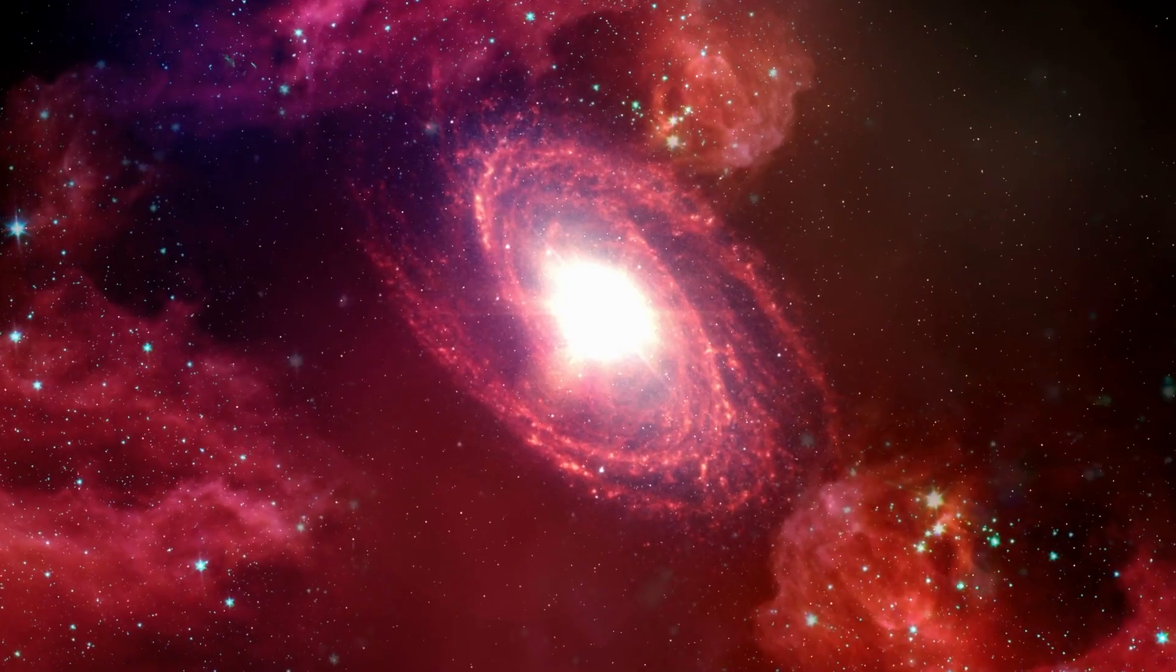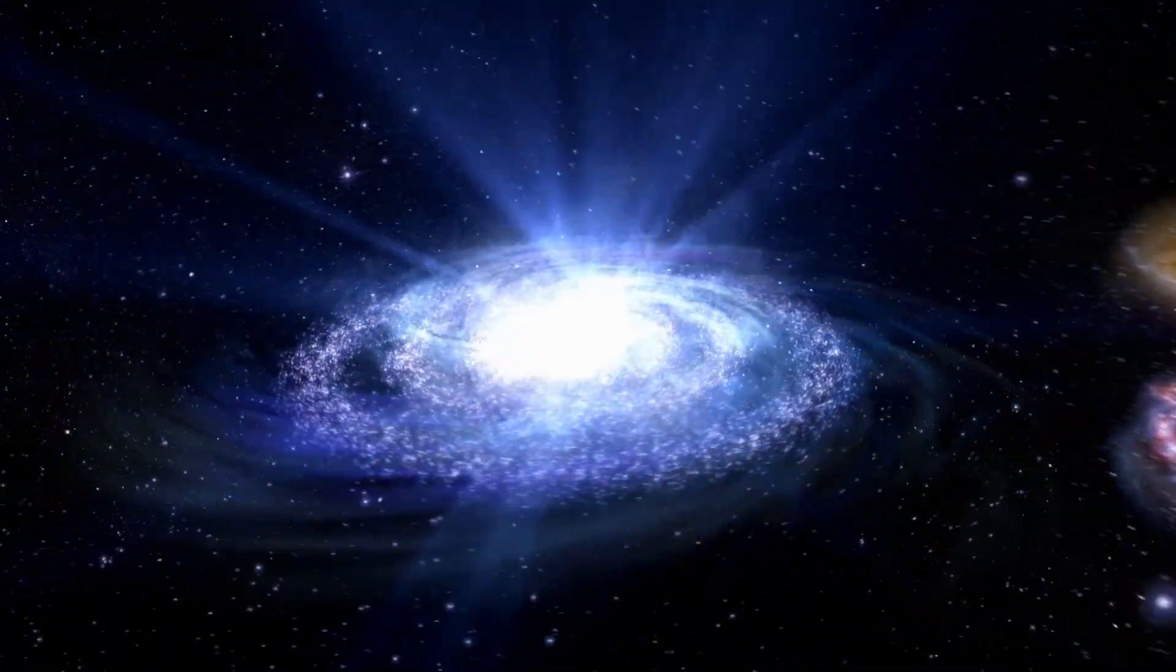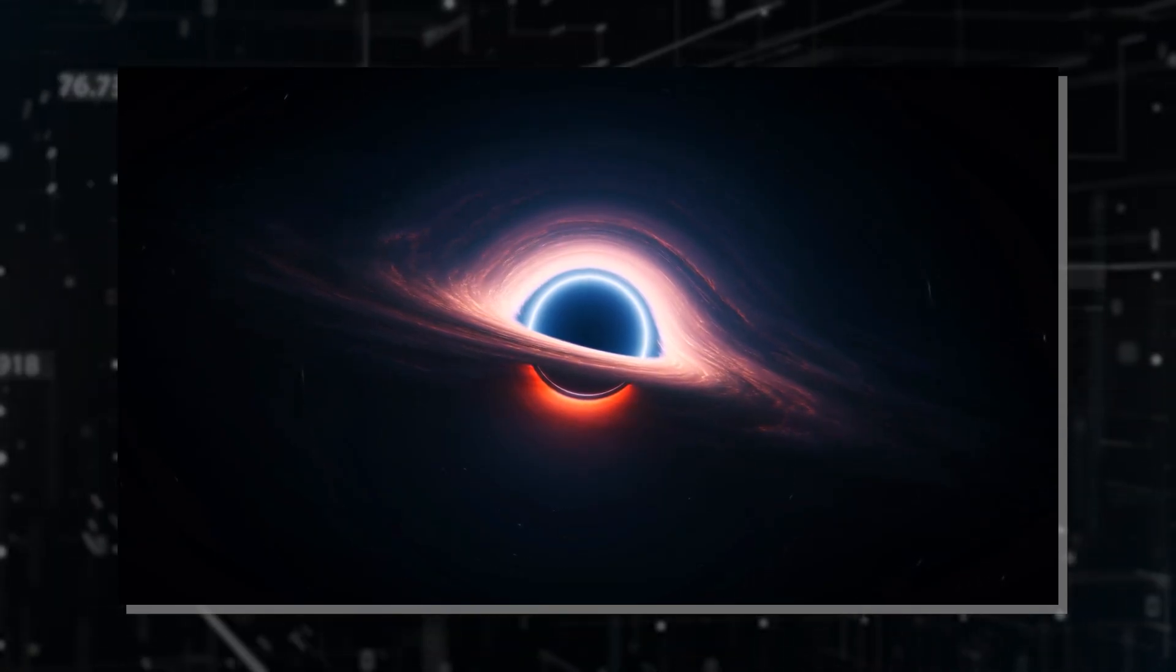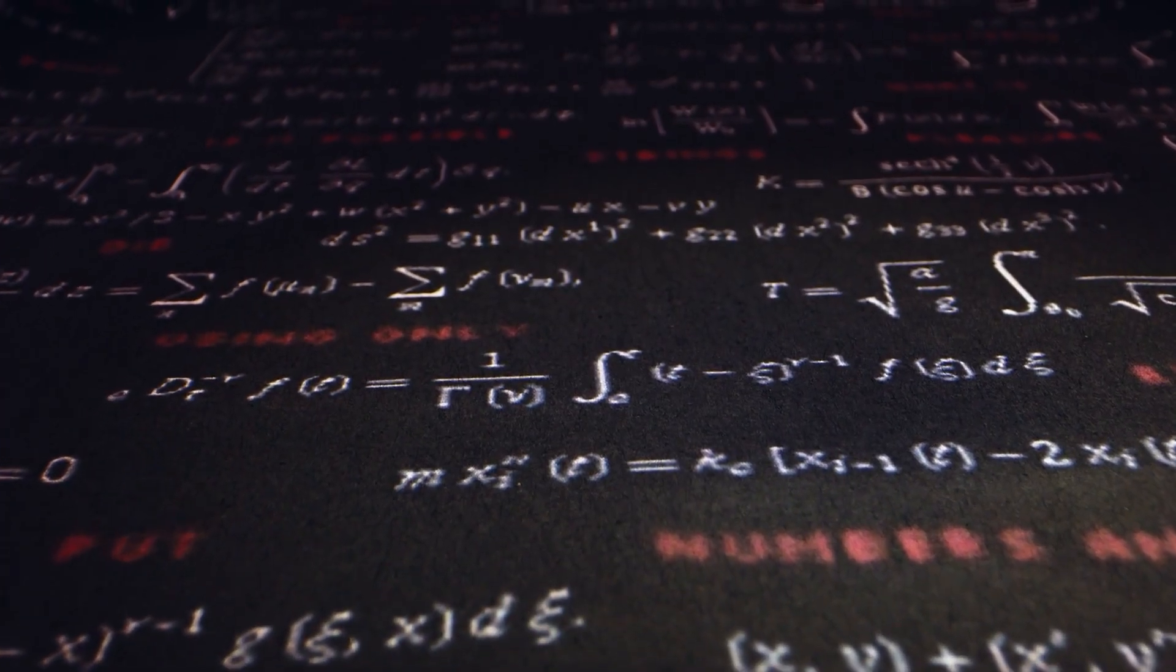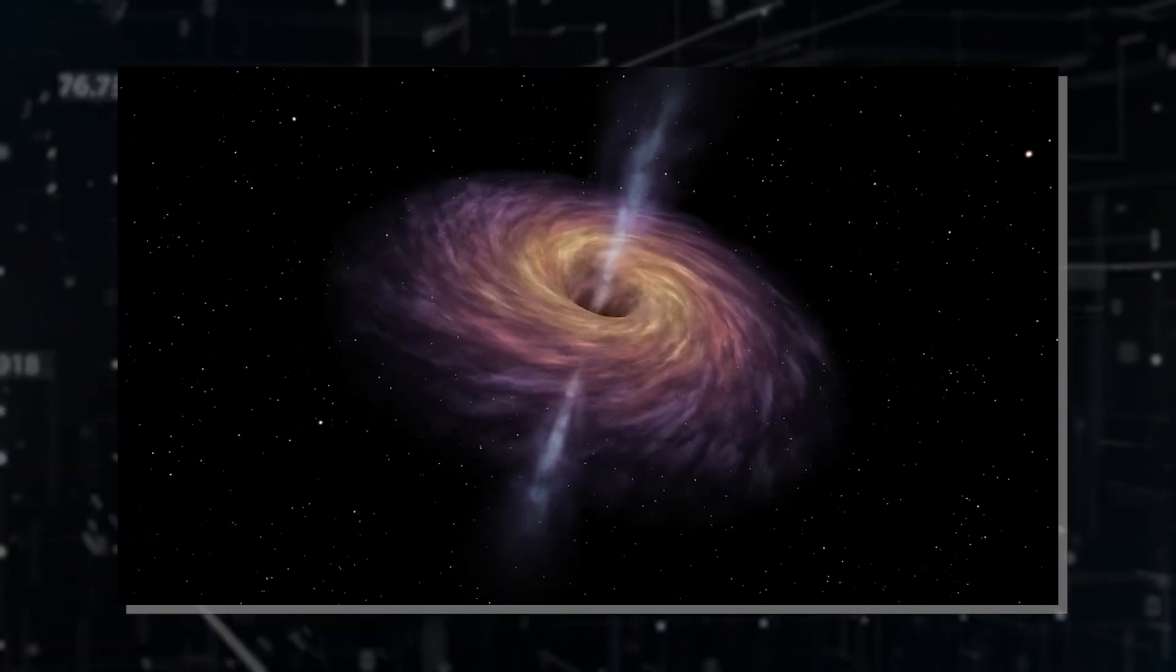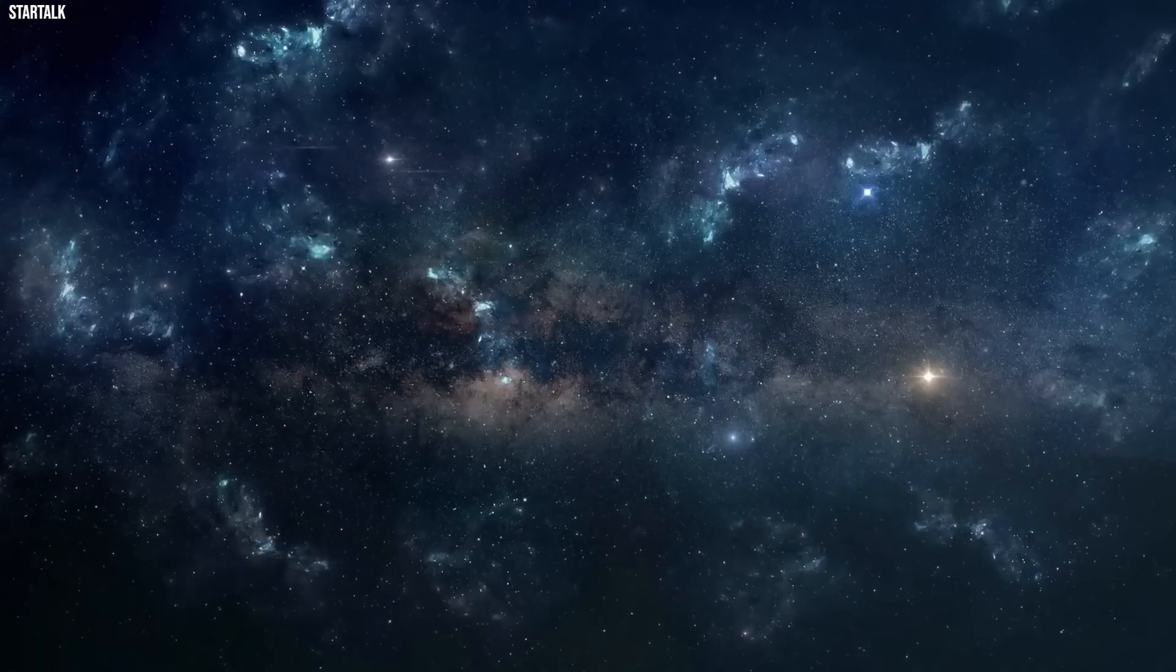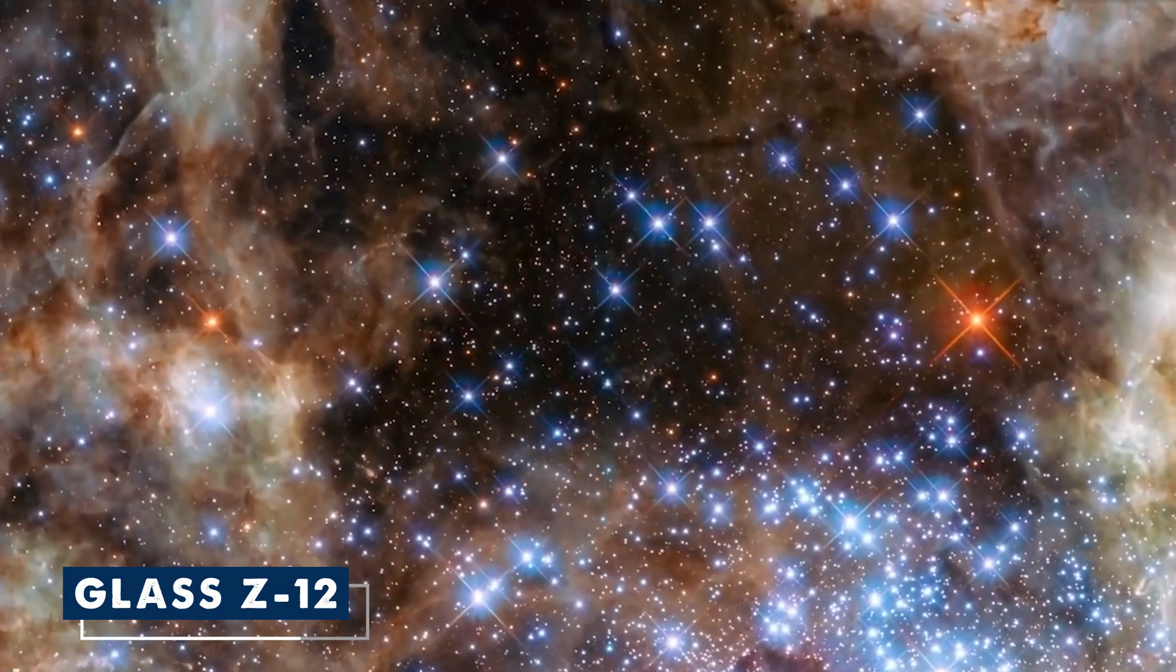One possible reason why these early galaxies seem big and bright is that there might be a mysterious mechanism that made stars form faster in the early universe. On the flip side, another idea suggests that black holes in the early universe might have played a role in making these galaxies so massive. But this theory leaves us with even more questions, like why these black holes got so big so quickly back then, and what other processes are happening that we haven't figured out yet. The thinking is that these black holes might have become huge in a short time, causing the creation of the many massive galaxies we see today. It's like trying to solve a cosmic puzzle, where each answer opens up more intriguing questions. Now consider the finding of Glass Z-12.